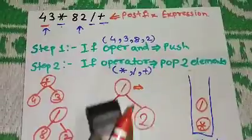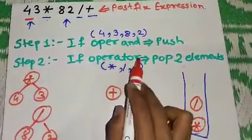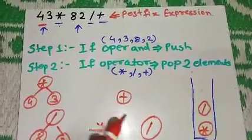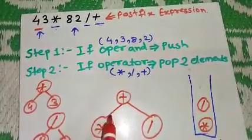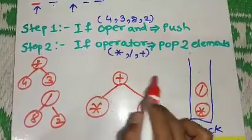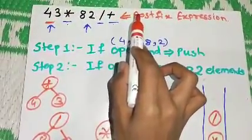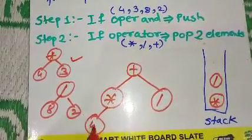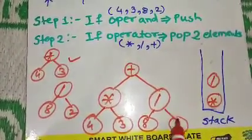Now the stack contains multiplication and division. The next character is plus, which is also an operator. We pop two elements: division and multiplication. The first popped element, division, becomes the right child, and multiplication becomes the left child of the plus operator. We push this back into the stack. There are no more characters in the expression, so we are done.